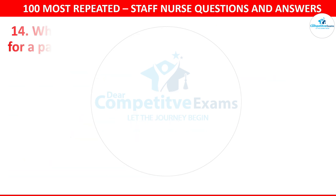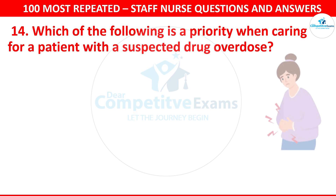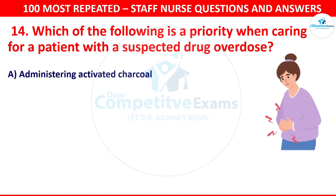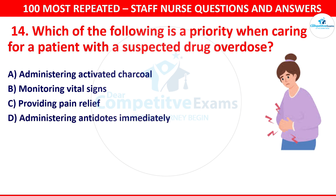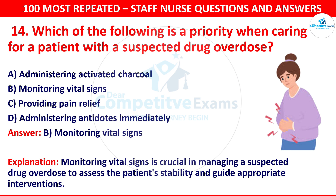Question 15. Which of the following is the priority when caring for a patient with a suspected drug overdose? The options are administering activated charcoal, monitoring vital signs, providing pain relief or administering antidotes immediately. The correct answer is monitoring vital signs. Monitoring vital signs is crucial in managing a suspected drug overdose to assess the patient's stability and guide appropriate interventions.